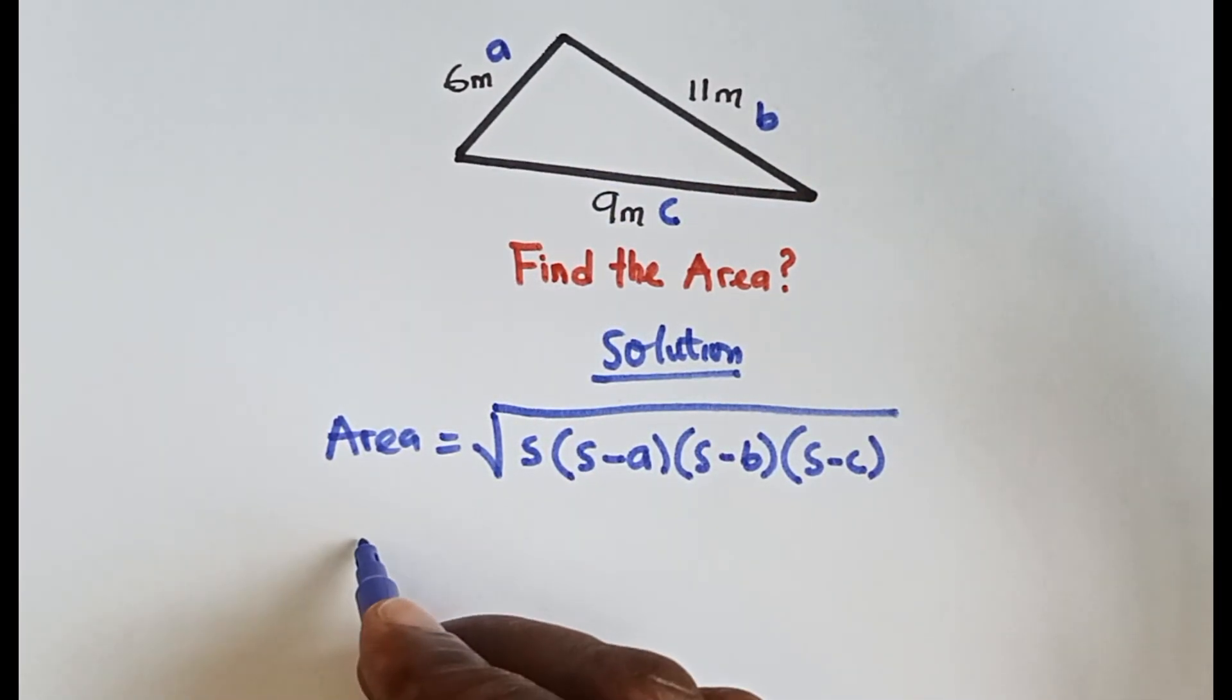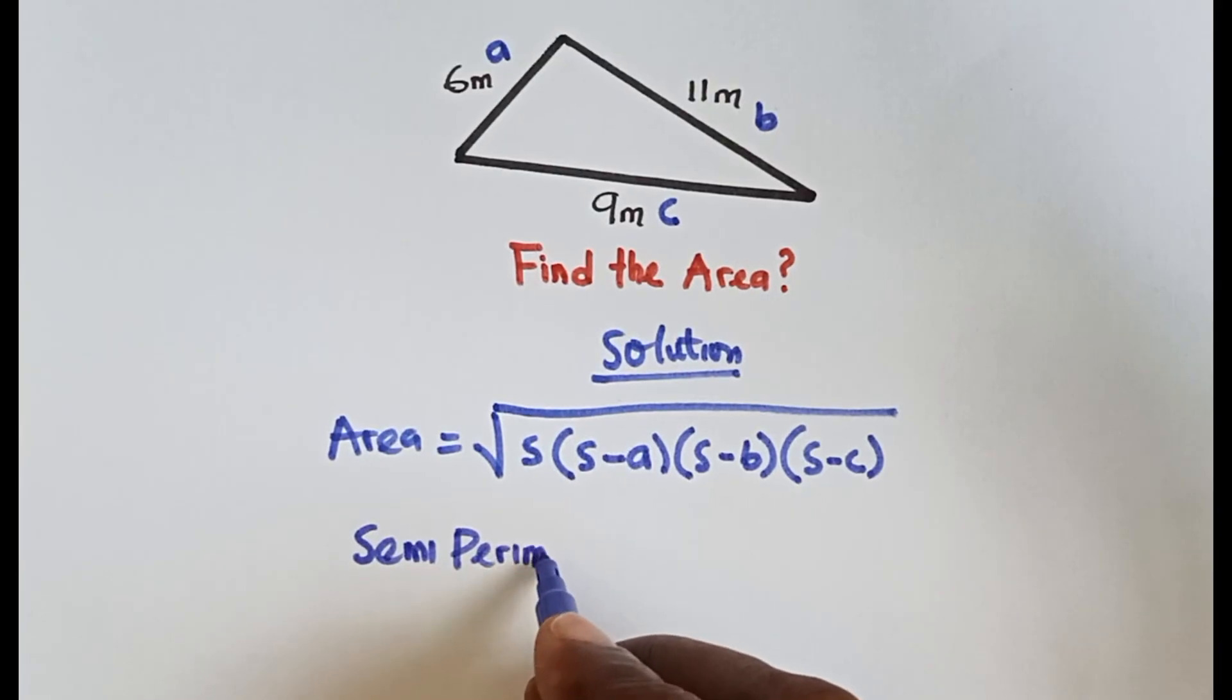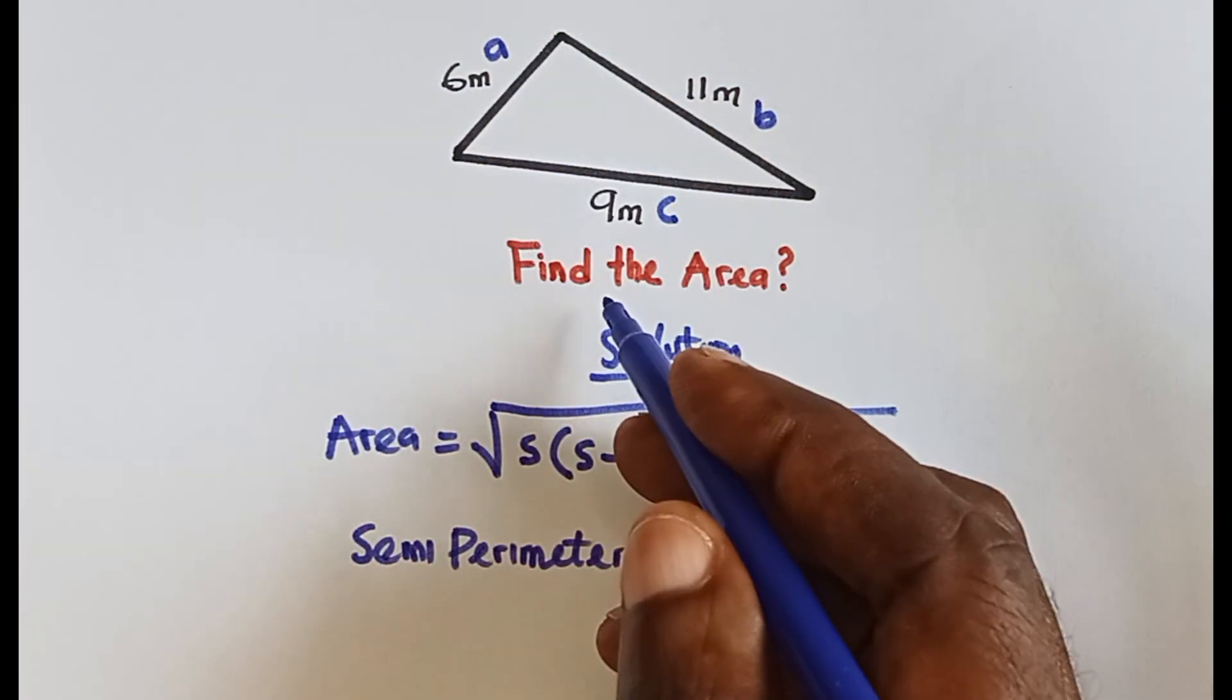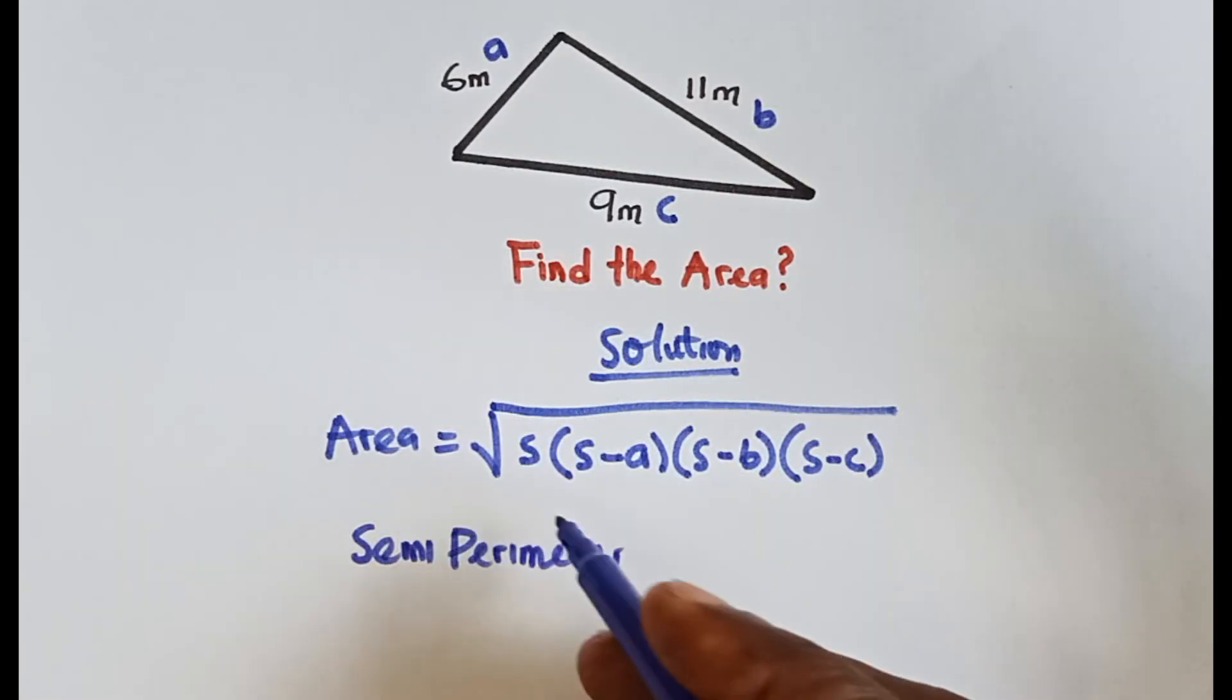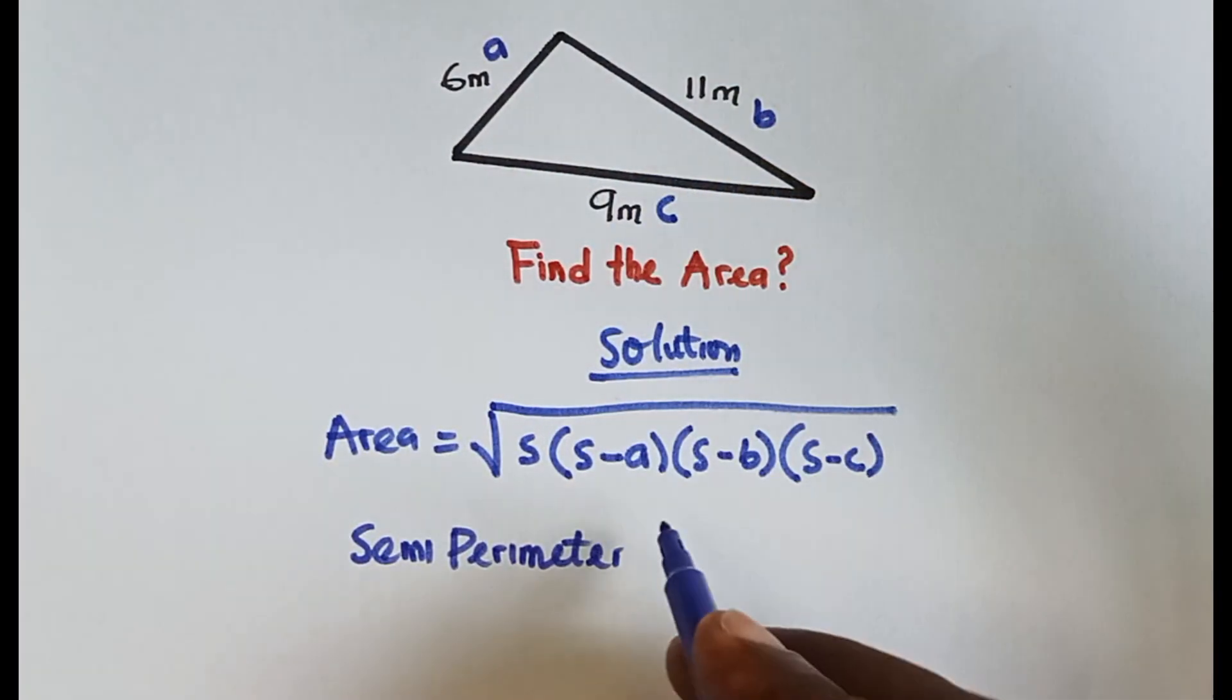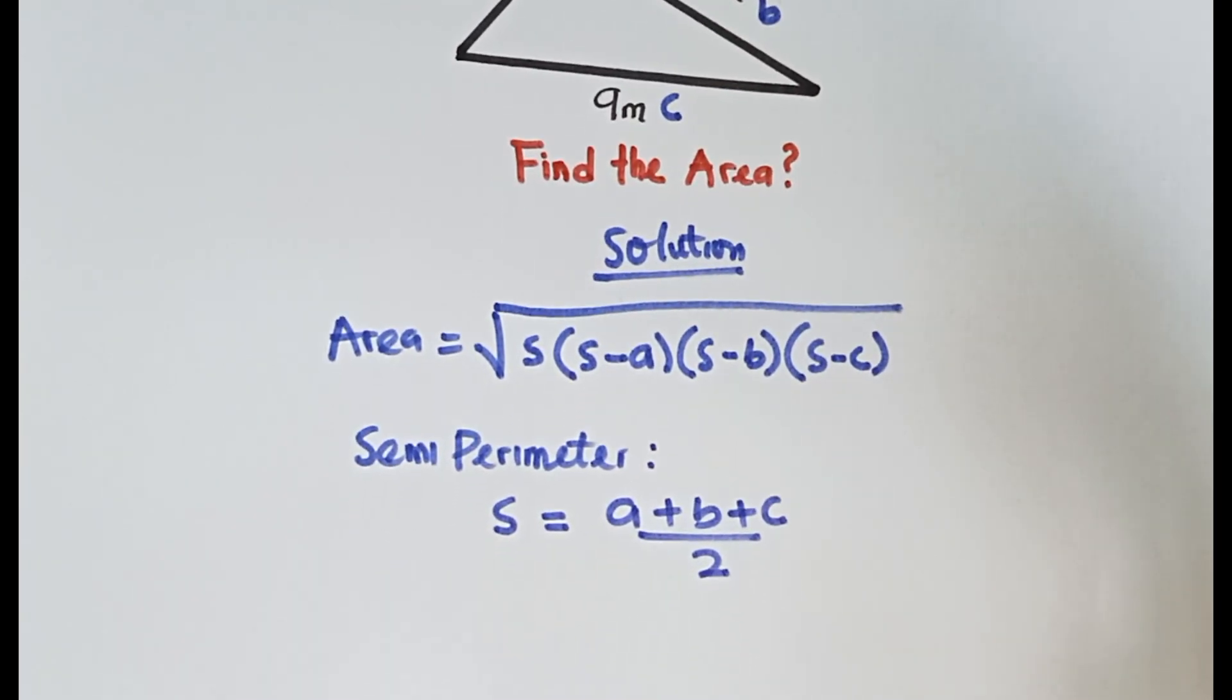And how do you calculate the semi-perimeter? You know perimeter is the addition of the boundaries, the edges, but semi-perimeter is the addition of the boundaries divided by two. So we say the semi-perimeter is equal to a plus b plus c over 2.